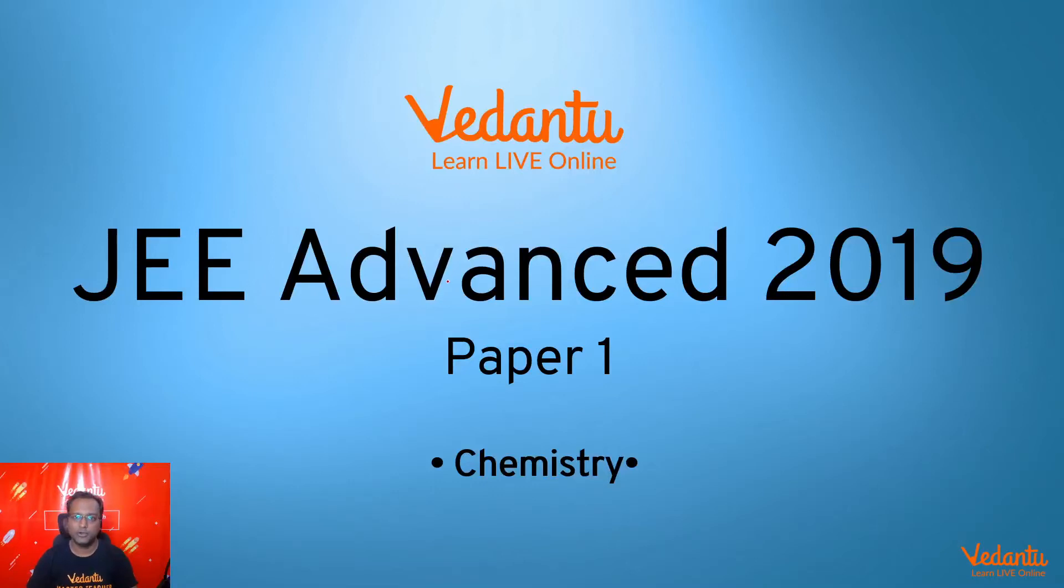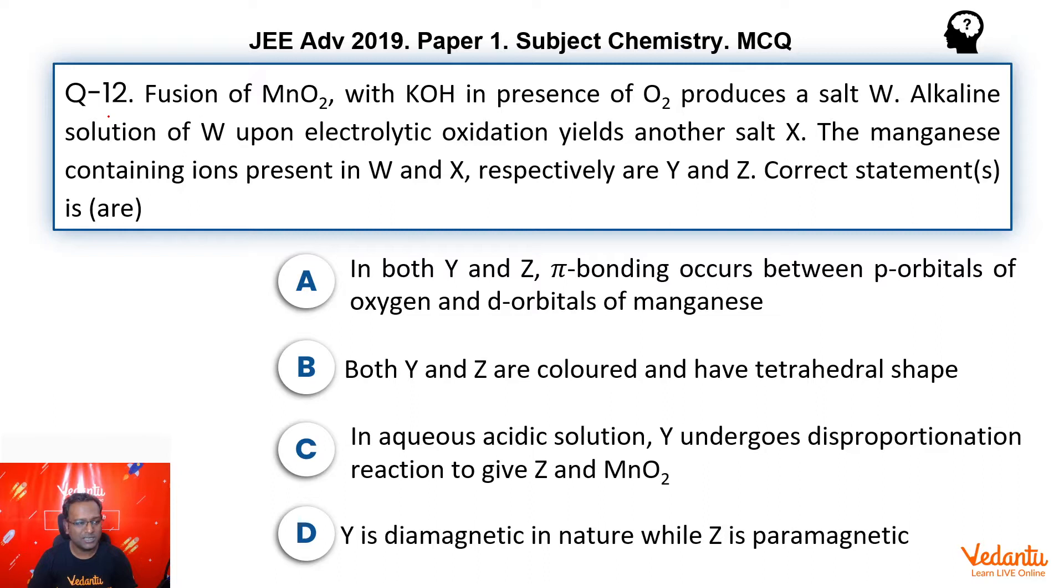Hi guys, my name is Shubhang Garodia, chemistry master teacher at Vedantu. Today we are going to talk about JEE Advanced 2019 Paper 1, question number 12. This is a multiple correct type question. It talks about MnO2 fusion. He's saying react MnO2 with KOH and O2, you get W. Then alkaline solution of W gives electrolytic oxidation to get salt X. We have a few options given, so let's solve the question.